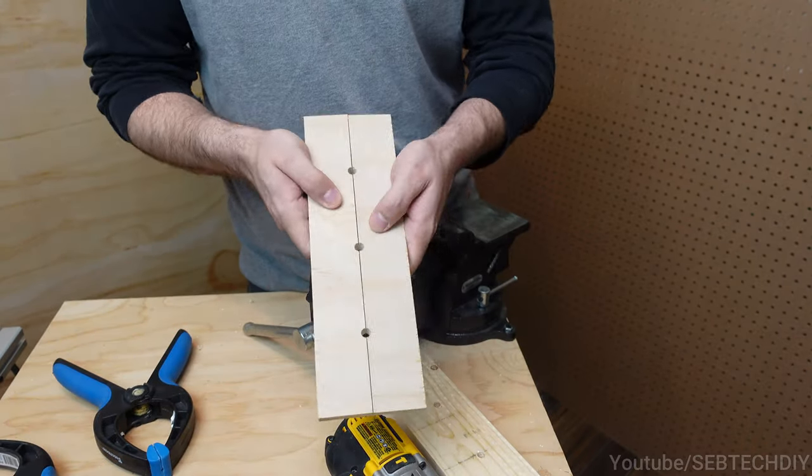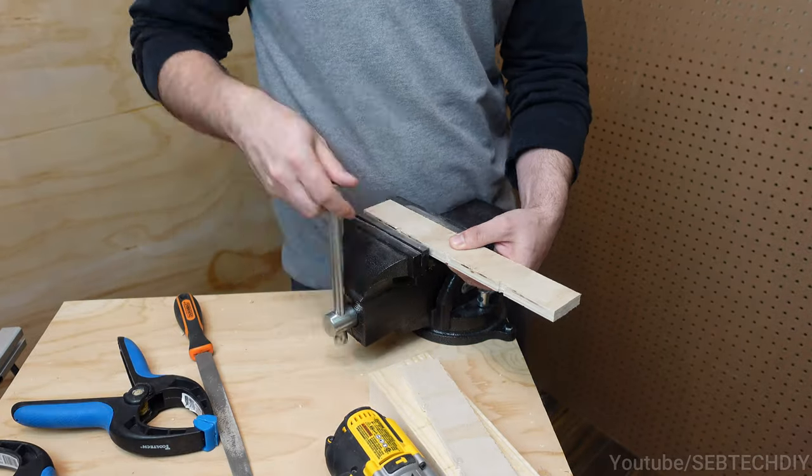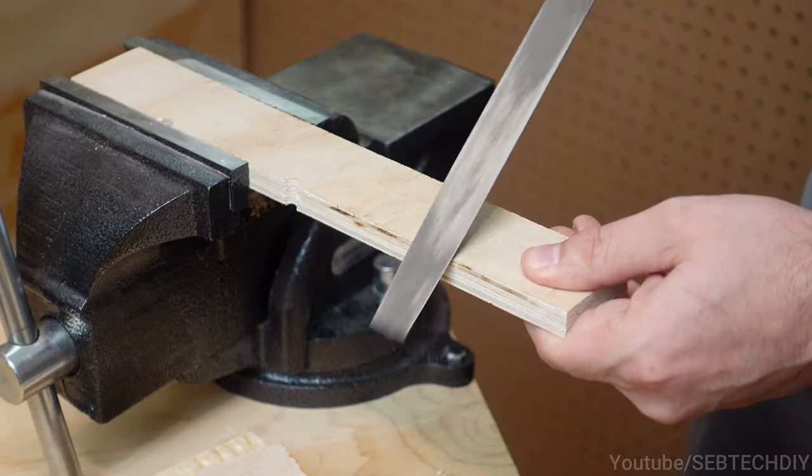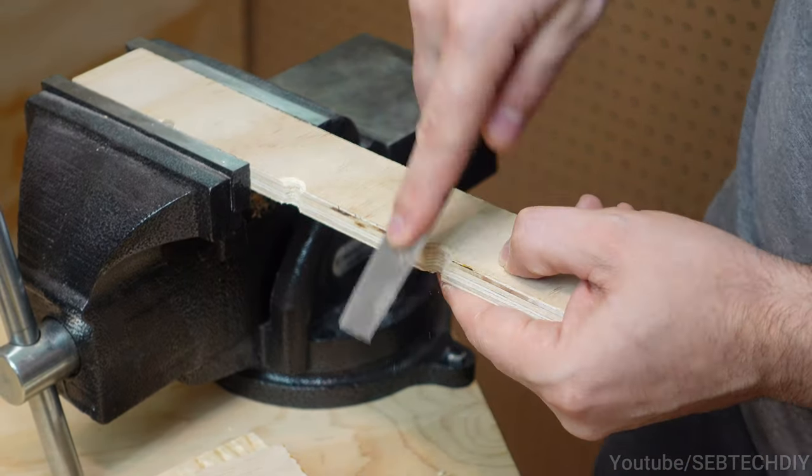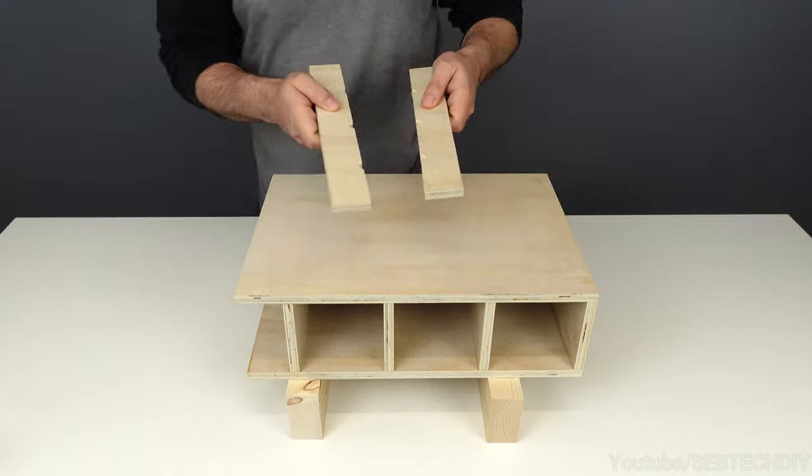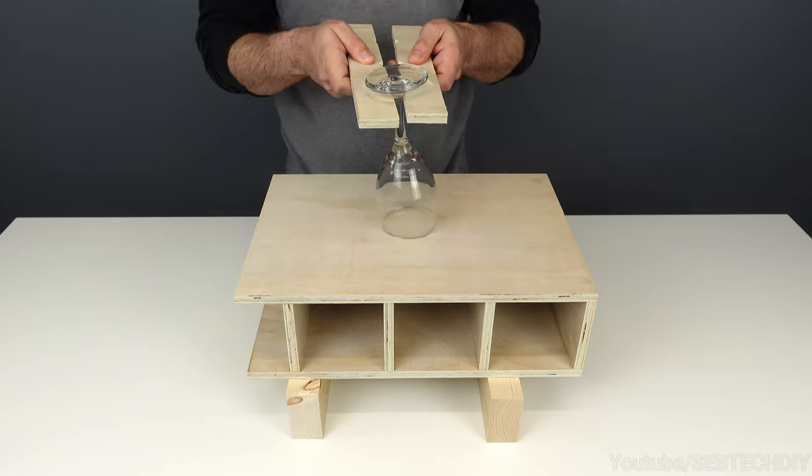One advice here: if I had to make this project again, I would put a little bit more spacing between all the notches so the wine glasses don't touch each other. Good, it's all smooth. Let's test it out. Now that our wine glasses are safe, we can move on to the next step.